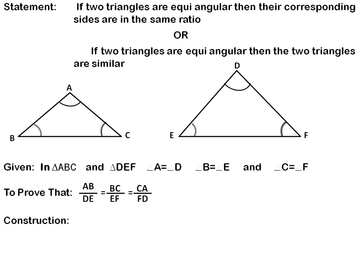Now for the construction. For proving this theorem, we need a construction: cut AB equal to DG, and cut AC equal to DH, then join G and H with a dotted line.